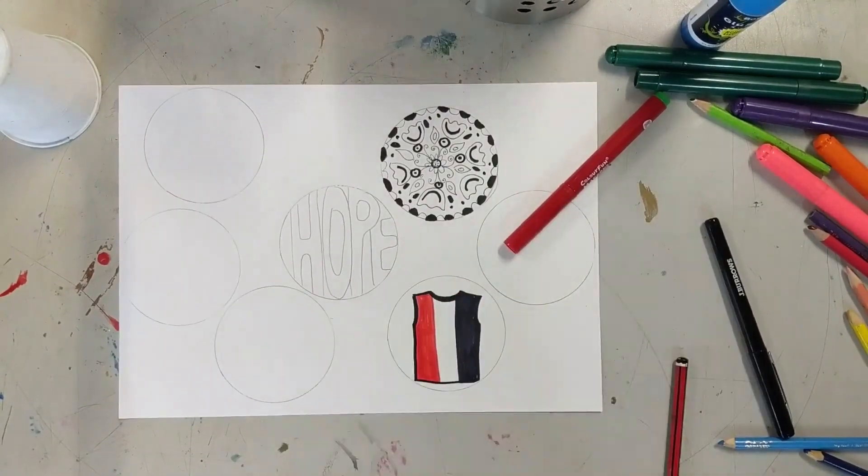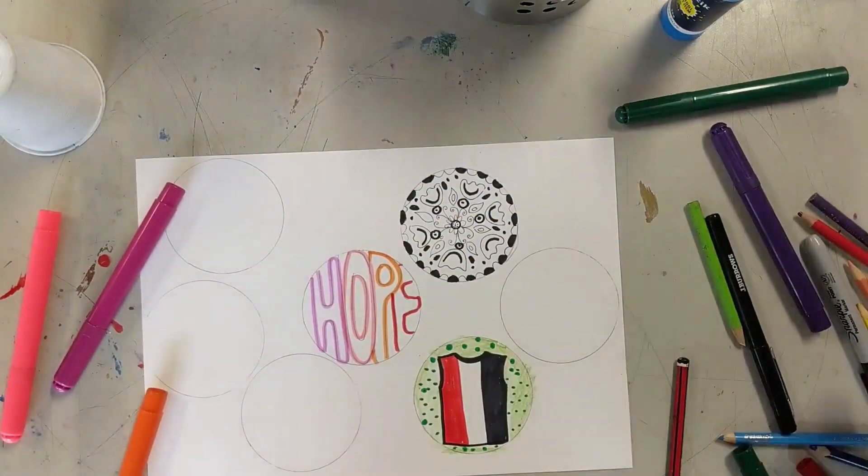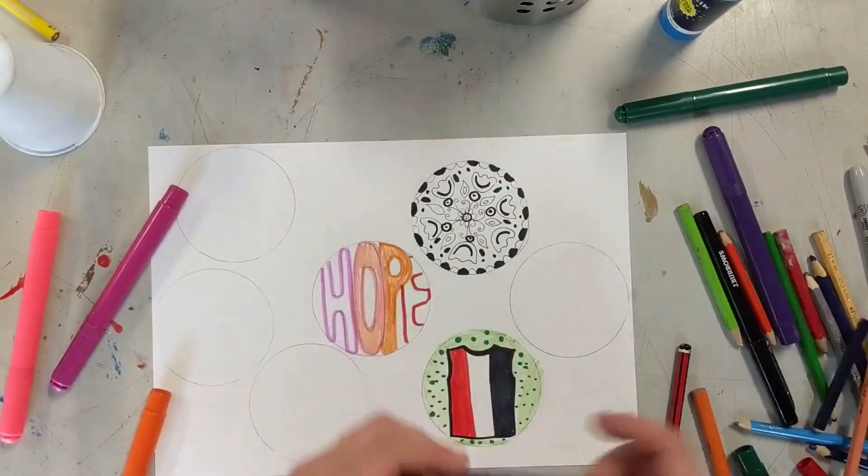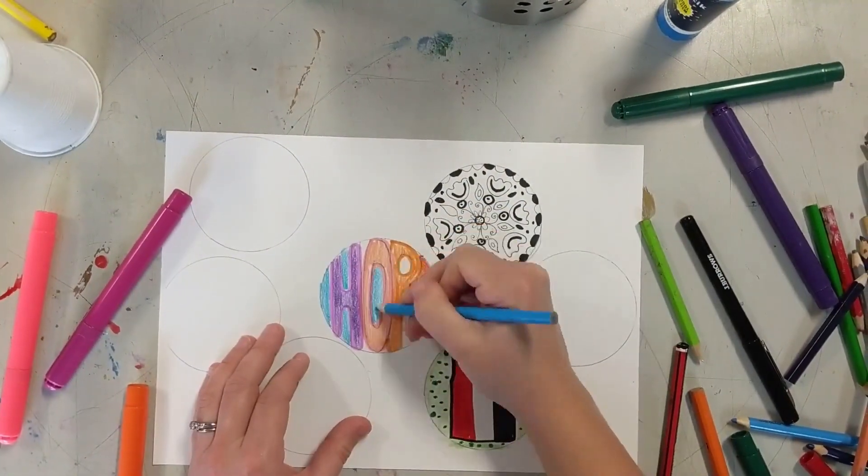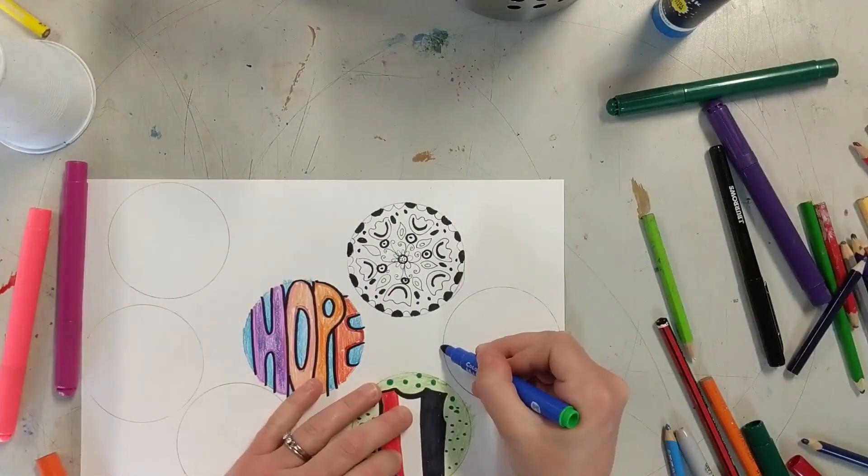You could just do the colors of your team, maybe you aren't into AFL, maybe you like rugby, that's okay as well. But you can see how I've colored in and done a pattern in the background. I'm going in and coloring my word, my hope and I've outlined it as well so it pops.